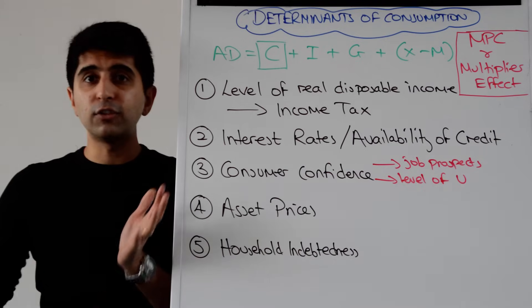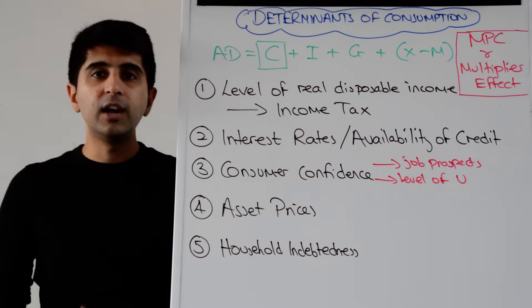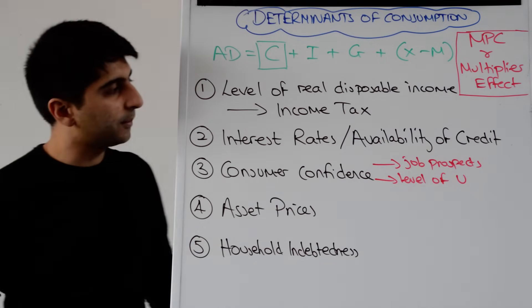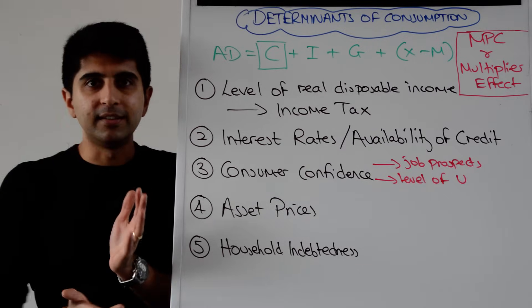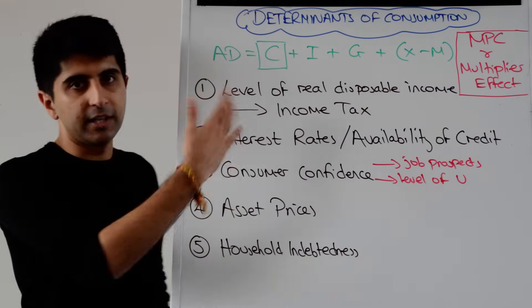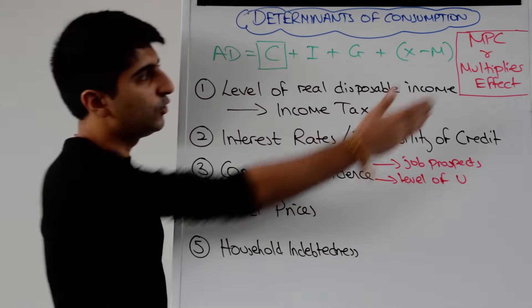There are other factors too like the age structure of the population, like weather you can also argue as well which can affect consumption. But these are the main ones. The key thing for you is to be able to develop a chain of analysis linking to consumption increasing or decreasing and therefore aggregate demand increasing or decreasing using such phrases.